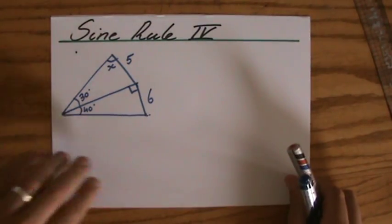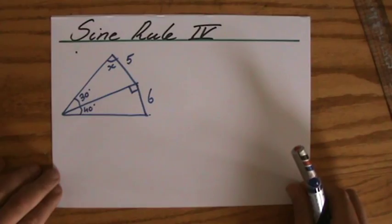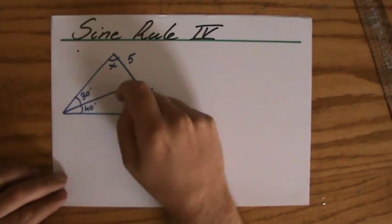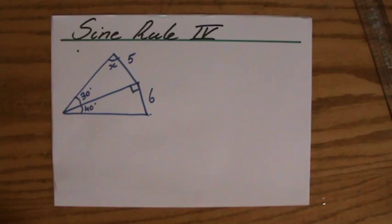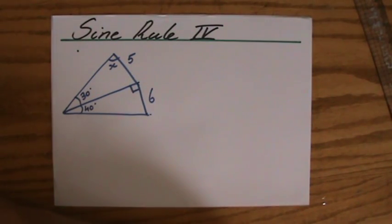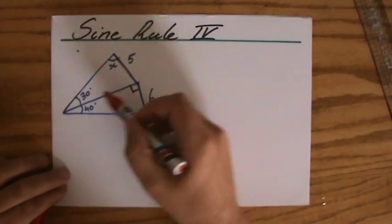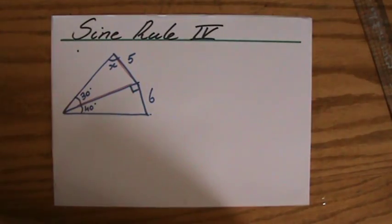Okay, we have another example question. In this particular situation, we have to find the value of x, the size of that particular angle. Well, can I use ordinary trigonometry - sine, cosine, or tangent? In that case, I need a right angle triangle, and that is not a right angle triangle, so no.